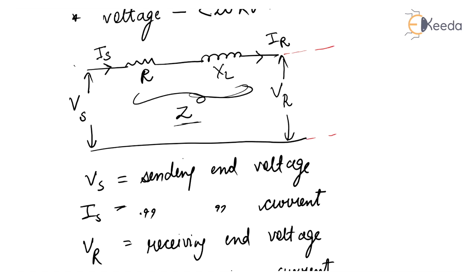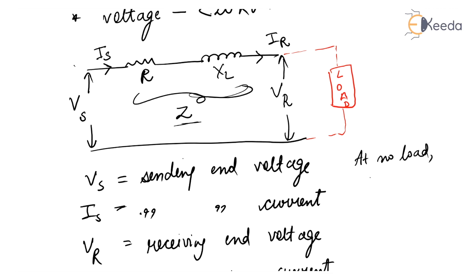Suppose there is some load across this circuit — a lagging load. When a system is at no-load condition, the current flowing in a transmission line is known as line charging current. At no load, when Ir equals zero, then Is is also zero, so there is no line charging current.